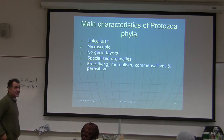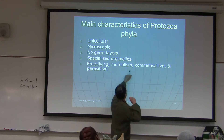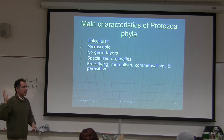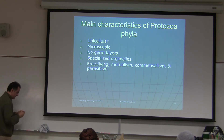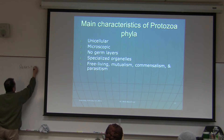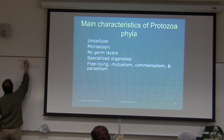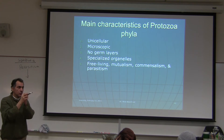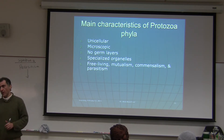Protista can be free-living, mutualistic, commensal, or parasitic. We have examples of each in the lab slides except commensalism — we do not have Entamoeba gingivalis, which is found in everybody's mouth. Symbiosis means two different species living together, with at least one metabolically depending on the other.